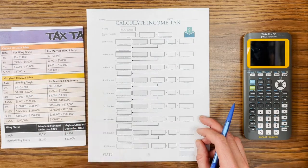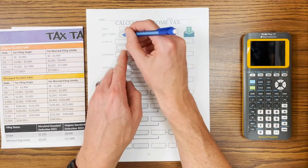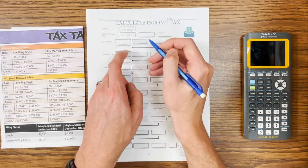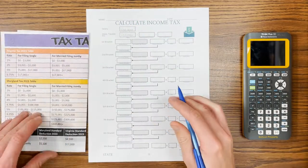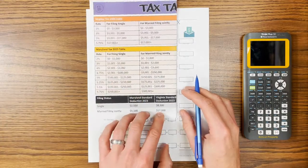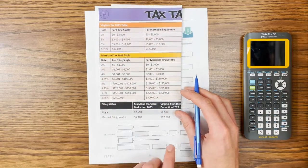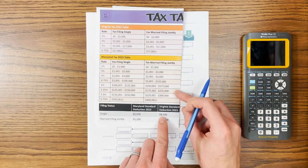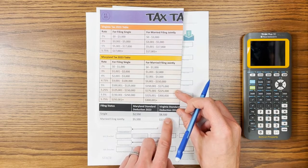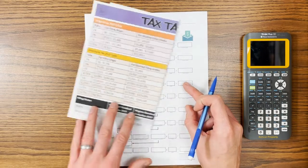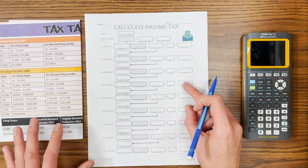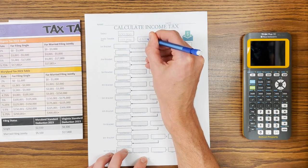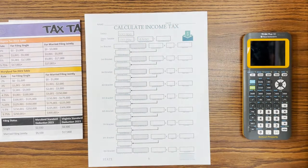Getting started, we need the salary that we are beginning with. We have a state standard deduction — and I look at my tables again; this one has Maryland and Virginia on it, so just make sure you're looking at the correct one. Virginia is $8,500 for someone who is filing single, which is what I am doing for this demonstration. So we have $8,500, which you are allowed to earn without paying any taxes on it.